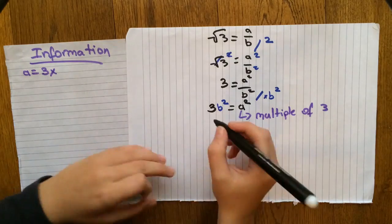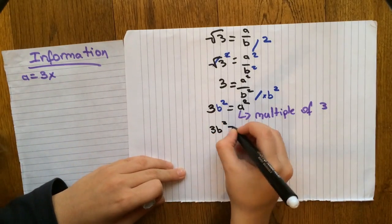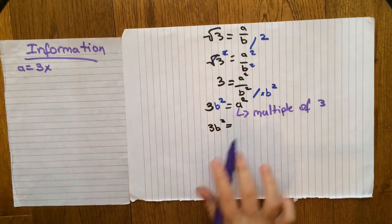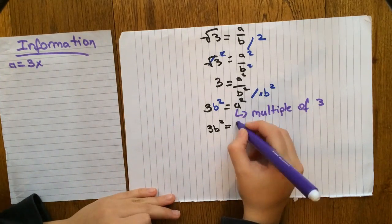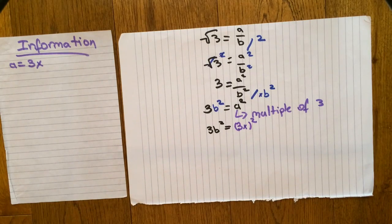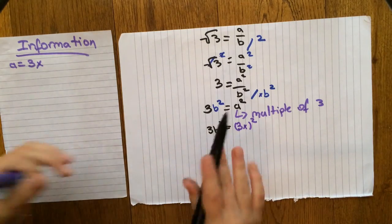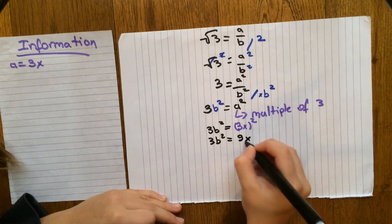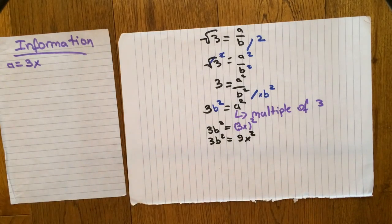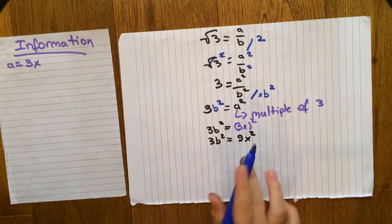If a is the multiple of 3, we can write that as 3x, x being any value. Now, we go back to our calculations. Replace a squared by 3x squared, and we're left with 3b squared is equal to 3x squared. Now, we do the calculations, and we find out that 3x squared is equal to 9x squared.